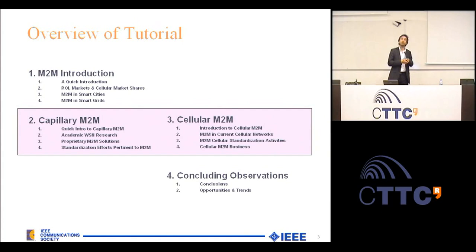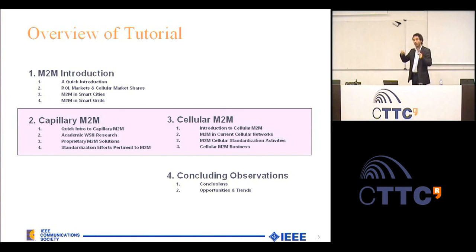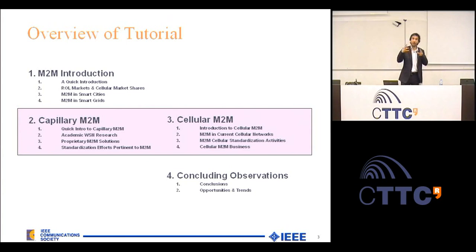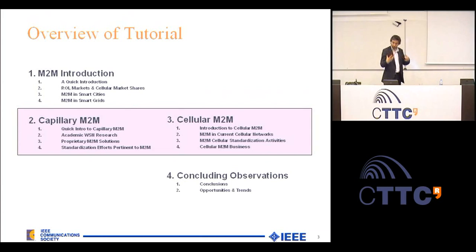In the second part I will present the capillary machine to machine systems. Capillary machine to machine is a term which has been coined within ETSI M2M, and it deals essentially with systems where you have short range communication using ZigBee-like wireless networks, Bluetooth-like wireless networks, or wireless LANs. We're going to be talking about the various systems which are currently on the market. Then my co-speaker Jesus Alonso will be taking over the cellular M2M — a very promising technology which is emerging and most likely going to be operational within a few years.